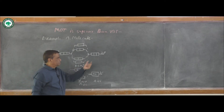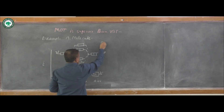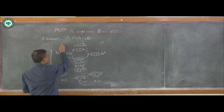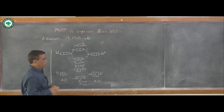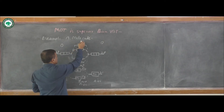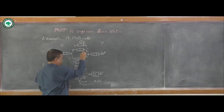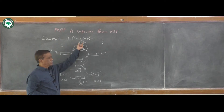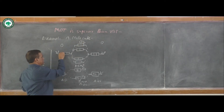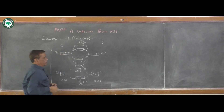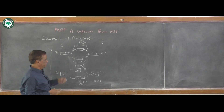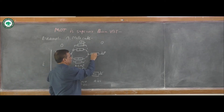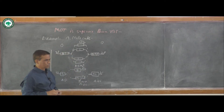Atomic orbitals of the first oxygen atom combine with atomic orbitals of the second oxygen atom, and there is formation of molecular orbitals of the O2 molecule. In this case, here is a single electron, single electron, single electron, and the fourth electron goes to pairing. Then again here is a single electron, single electron, and the fourth electron goes to pairing.